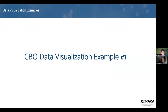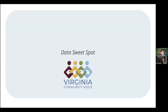Hi everyone, my name is Dana Kiernan — the pronunciation was perfect. I am from Virginia Community Voice. It is a community engagement and organizing nonprofit based in Richmond, Virginia, and right now we're working in the south side of Richmond.